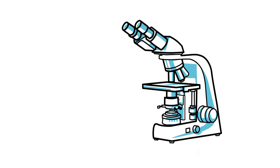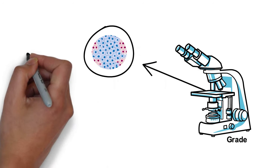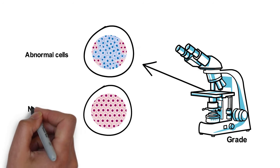The grade of the tumour refers to how abnormal the tumour cells look under a microscope when compared to normal cells. It tells your doctor how quickly the cancer may be growing and how likely it is to spread.